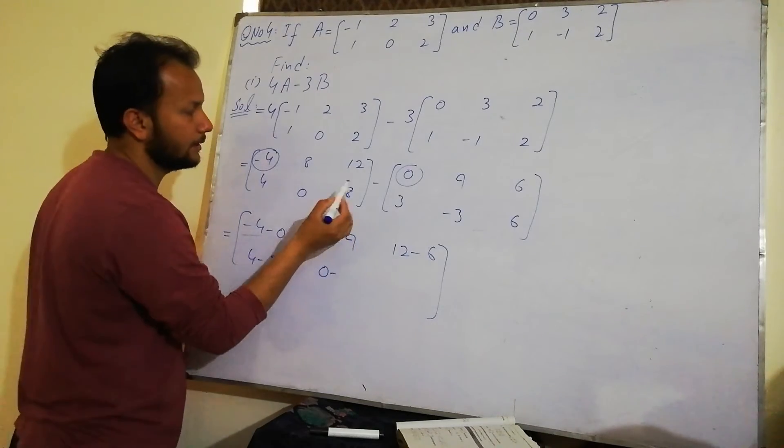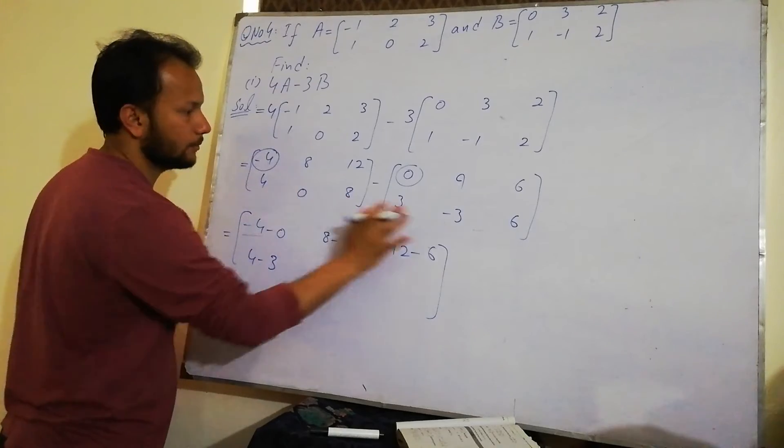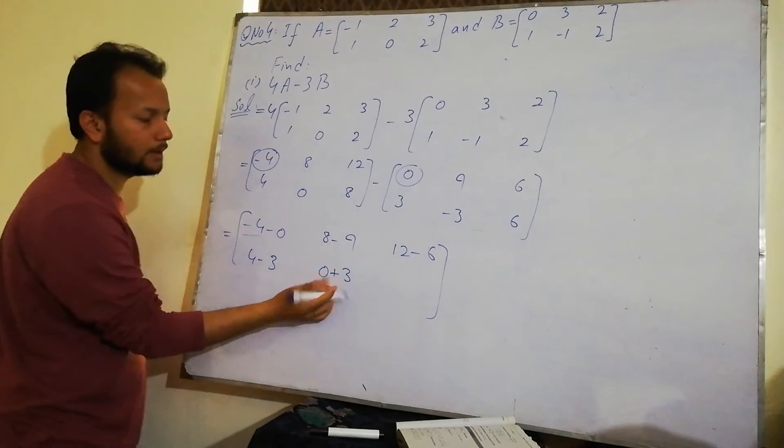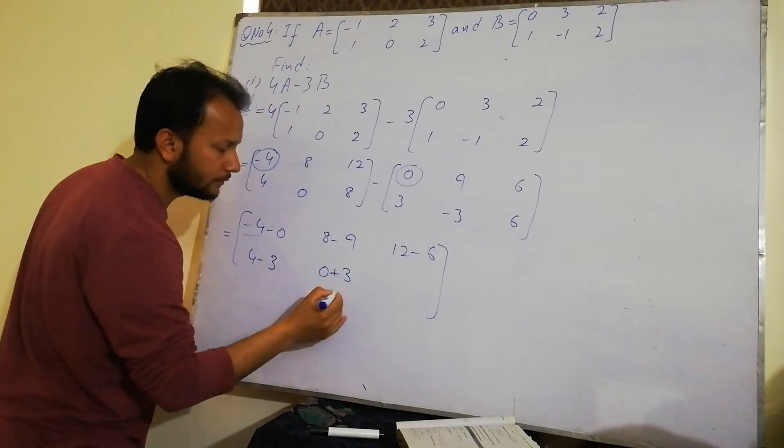0 minus, now this is negative sign. This is minus minus. And then minus minus. And then what happens? 3. You can write it here. How can you write it? This is the way. Minus sign. This is the one. And this is the negative sign.